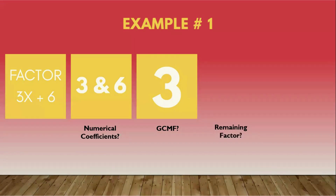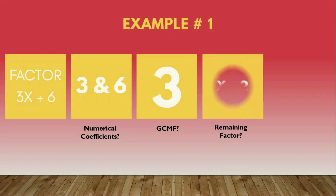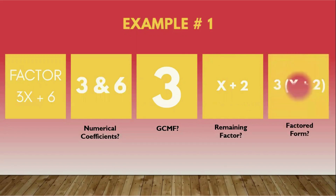Now divide 3x + 6 by 3 to get the remaining factor. 3x + 6 divided by 3 equals x + 2. Therefore, the factored form of 3x + 6 is 3(x + 2).